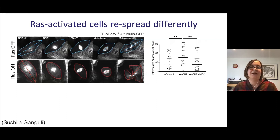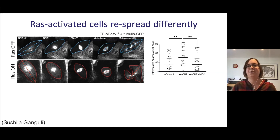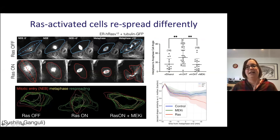Second, RAS-activated cells show much more in-plane rotation of the mitotic spindle. In control cells, the spindle orients along the long axis of the cell and of the mother cell, so daughter cells re-spread and re-occupy the same space the mother occupied. When RAS is activated, spindle angle is much more random, and daughter cells re-spread in a completely different orientation to the mother cell's footprint. With low RAS levels or when the MAP kinase pathway is inhibited, cells return to re-occupying their mother's position.